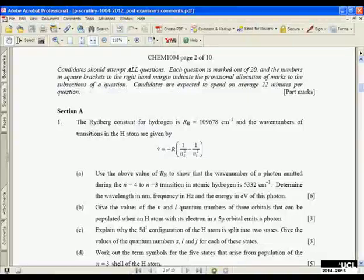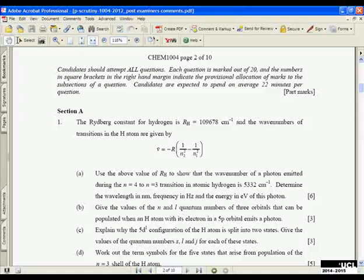Okay, so welcome to this podcast where I'm going to go through a couple of 1004-1601 questions for section A, that's the physical chemistry, and I'm going to look at the questions from 2012, so that was the paper taken in January 2012. Here's the paper, so let's have a look. Section A, question 1, so we're told the Rydberg constant for hydrogen, we're given a value there, and the equation for the wave numbers of the transitions in the hydrogen atom.